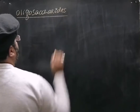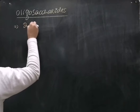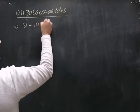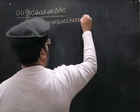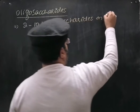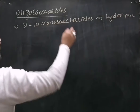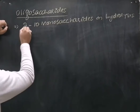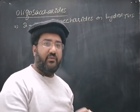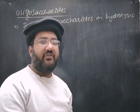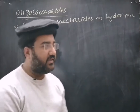Oligosaccharides are those carbohydrates that yield 2 to 10 monosaccharides on hydrolysis. They yield 2 to 10 monosaccharides. If they yield 2 monosaccharides, they are called disaccharides. If they yield 3, they are called trisaccharides. And if an oligosaccharide yields 4 monosaccharides, then that is called tetrasaccharides, and so on.